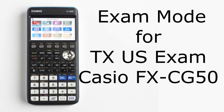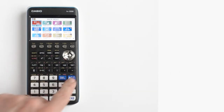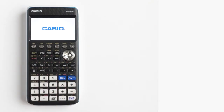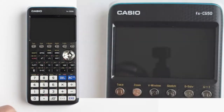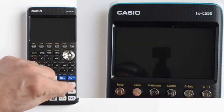How do I go into exam mode for the Texas U.S. exam on the Casio FX-CG50? First, you need to turn off the calculator by pressing the shift button, then the blue AC on button. Then with your left hand, press and hold the plus sign button and the divided by sign button at the same time. While holding these two buttons, long press the blue AC on button.